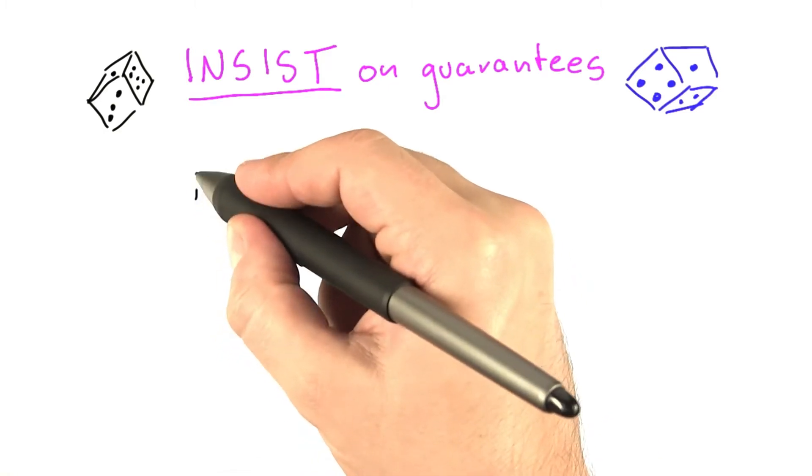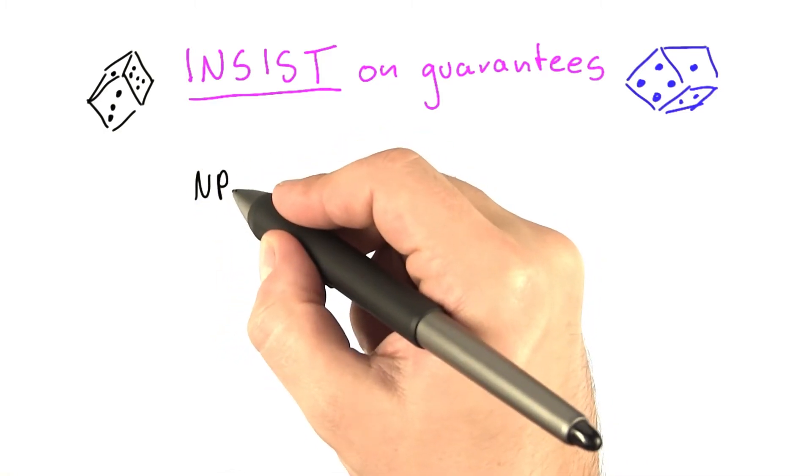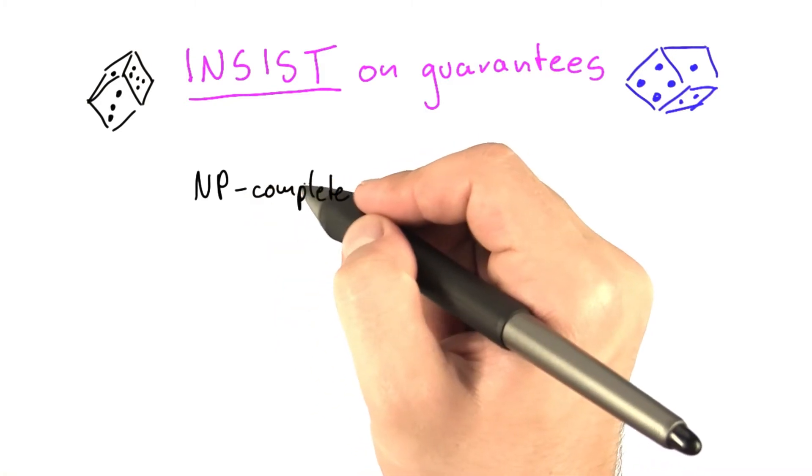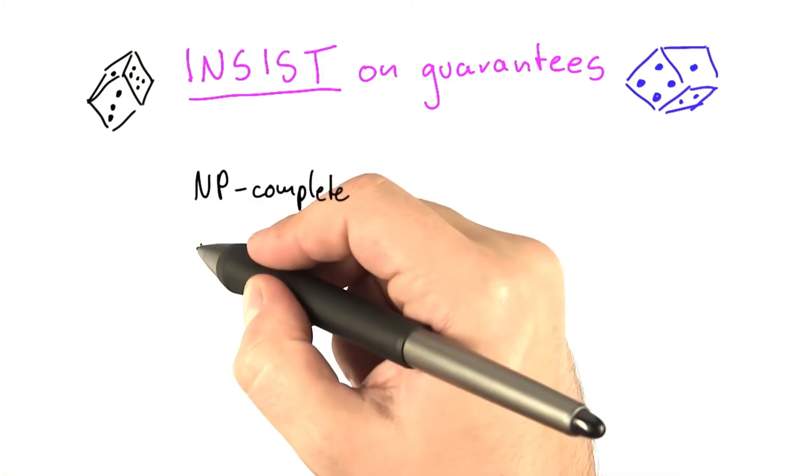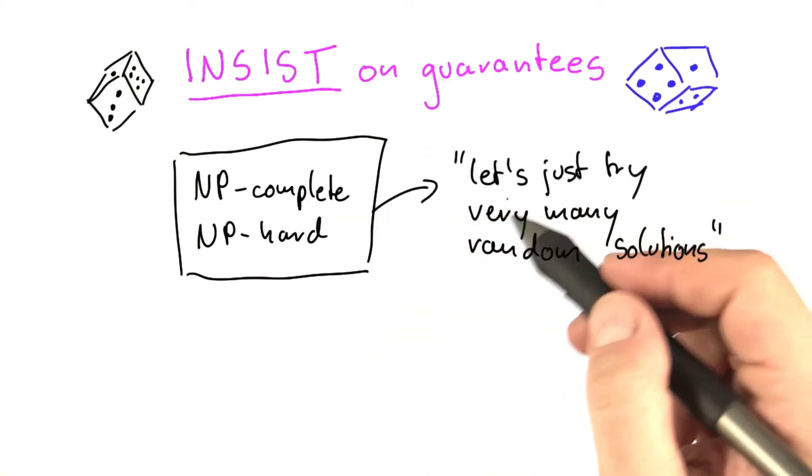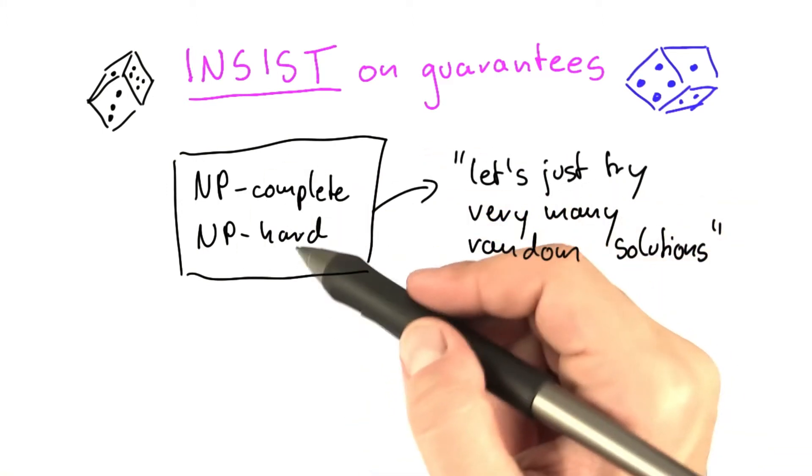So some people when they see an NP-complete problem or an NP-hard problem, and NP-complete of course being for the decision problem and NP-hard for the optimization problem, just terminology means both problems are hard. And then some people will just say, oh, this is NP-complete or this is NP-hard.